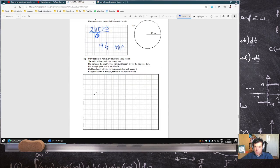Mary decides to walk every day over a 5 day period. She walks distance 3 pi r on day 1, she increases by 15% each day for the next 4 days. On day 5, how long does it take her to complete her walk?